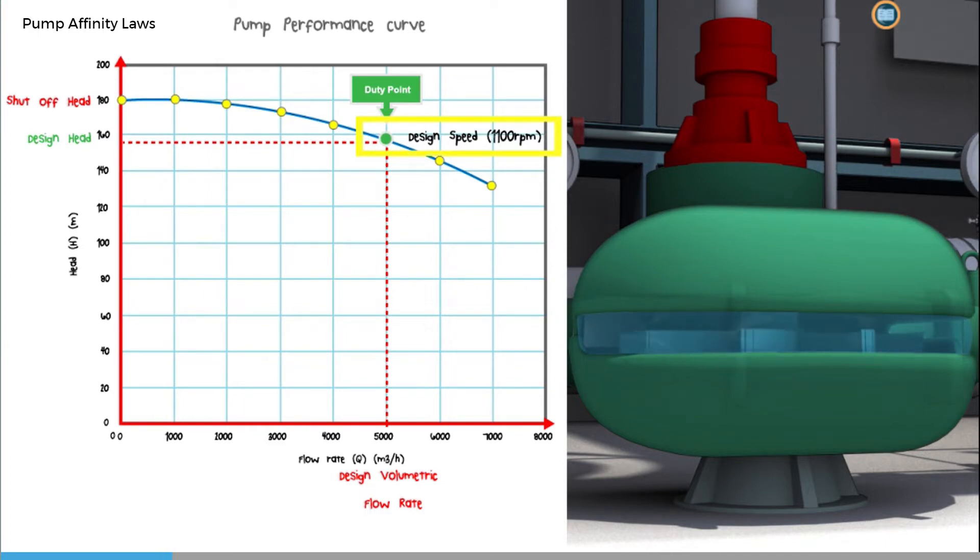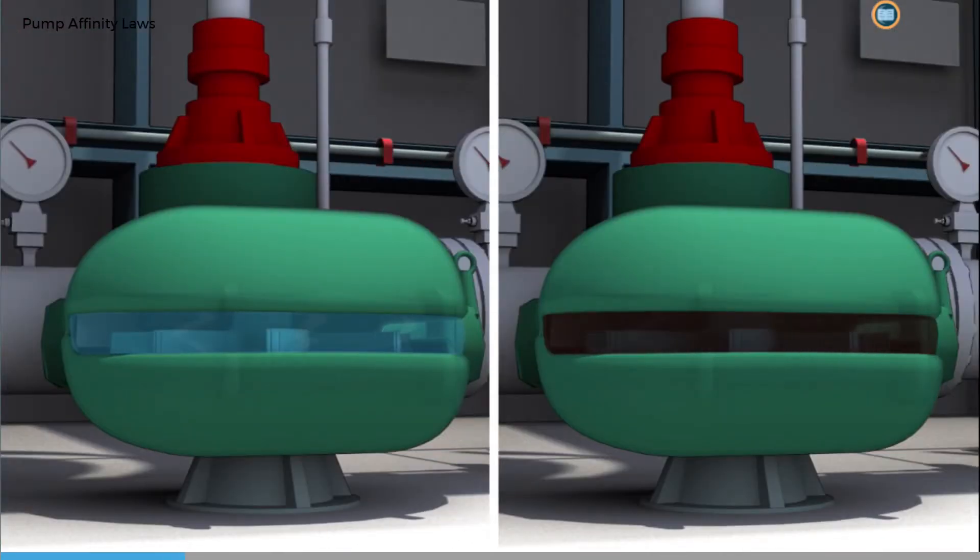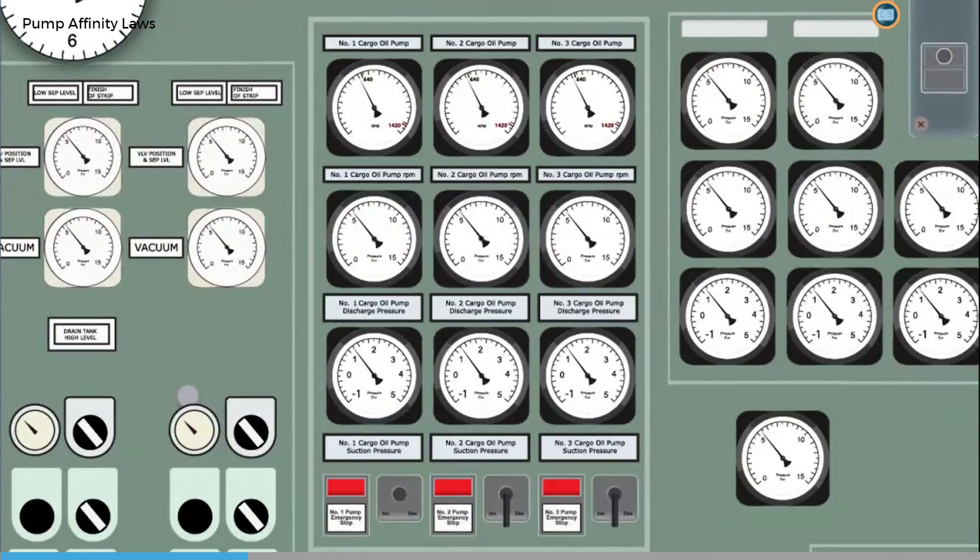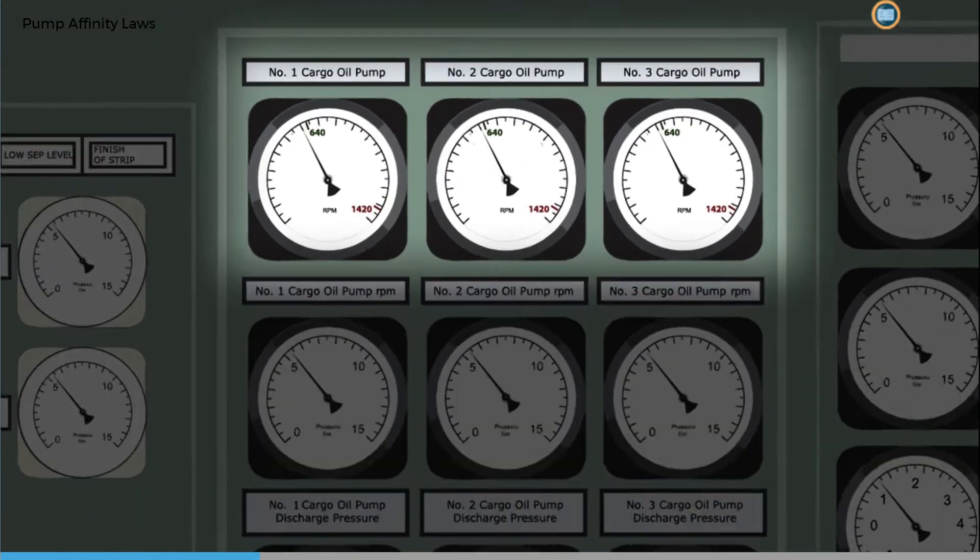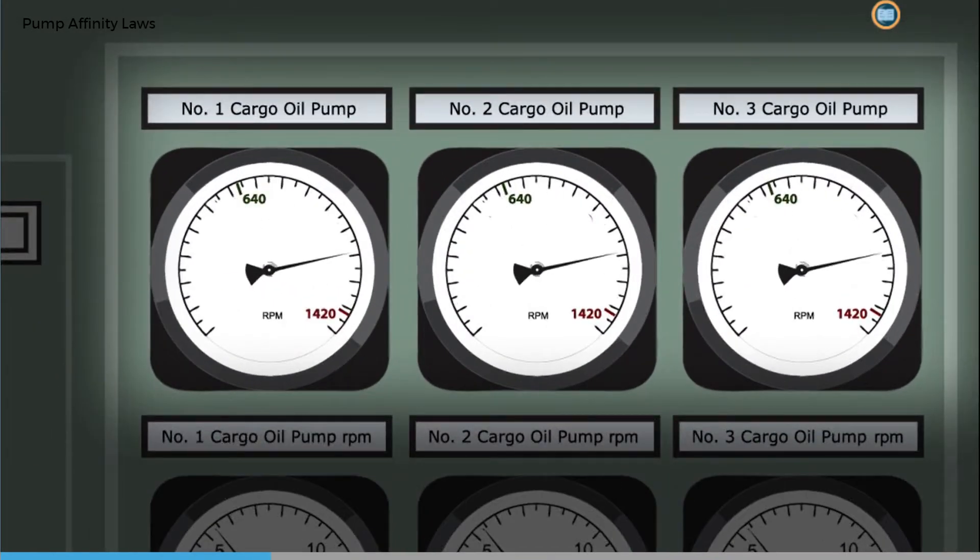In reality, centrifugal pumps found on crude oil tankers work at variable speeds, and they are designed to operate with different types of crude under a variety of pumping conditions. Centrifugal cargo pumps can typically operate at a rotational speed of between 6 and 1200 revolutions per minute.